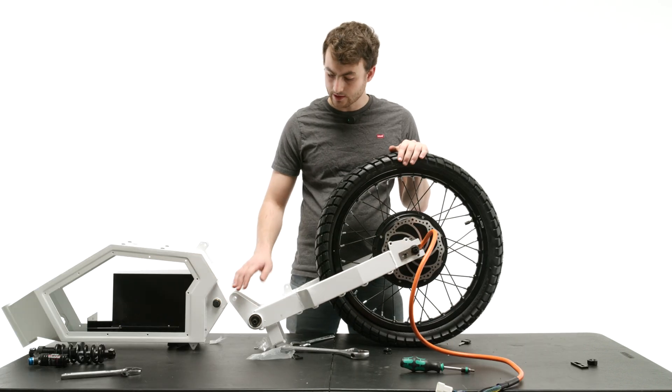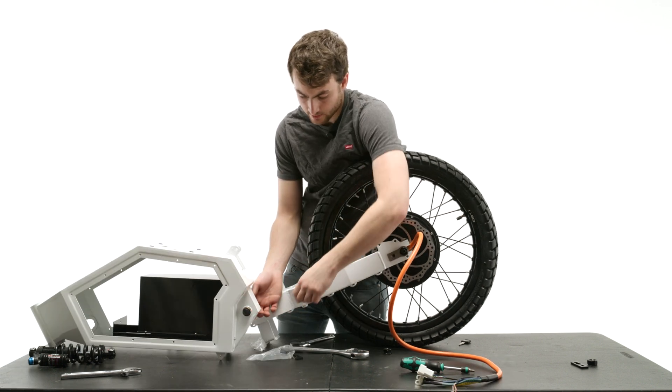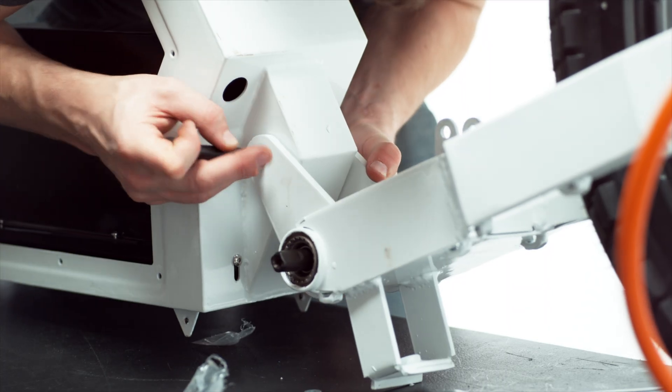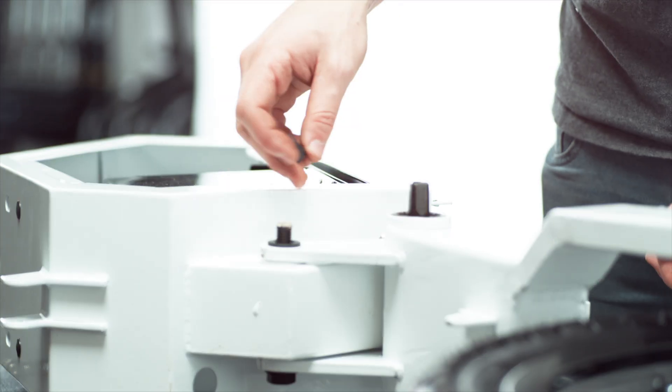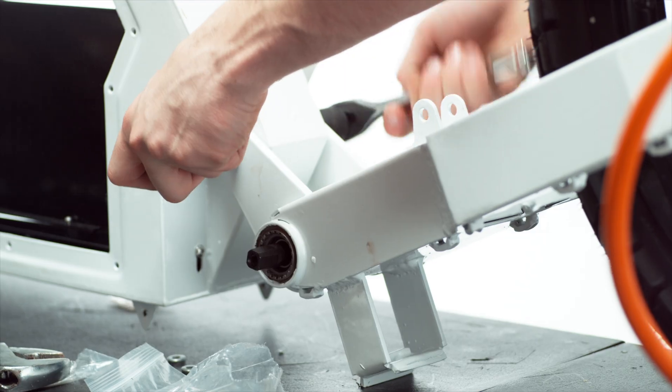Now I'm going to go ahead and attach the swing arm to the body of the frame. There's a bolt here that goes through the center of the frame. Unscrew it, line that up with the swing arm and drop the bolt back through. Make sure that you put the washers back on and then I'm going to go ahead and tighten the nuts down.